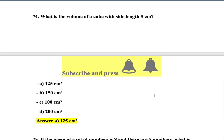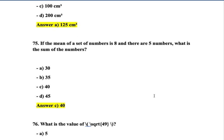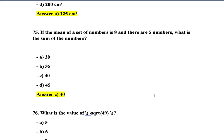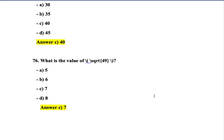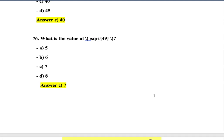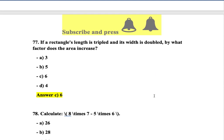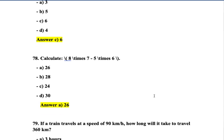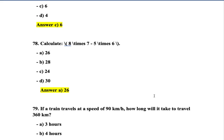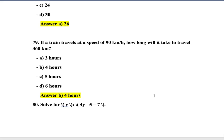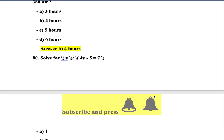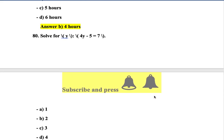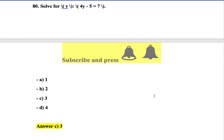Question 74: What is the volume of a cube with side length 5 cm? The volume is 125 cm³. Question 75: If the mean of a set of numbers is 8 and there are 5 numbers, what is the sum? Answer C — 40. Question 76: What is the value of the expression? Option C. Question 77: If a rectangle's length is tripled and width is halved, by what factor does the area increase? Option C. Question 78: Calculate 8 × 7 minus 6 — answer is 50. Question 79: If a train travels at 90 km/h, how long to travel 30 km? Option B. Question 80: Solve for y in 4y - 4 = 7 — option C.